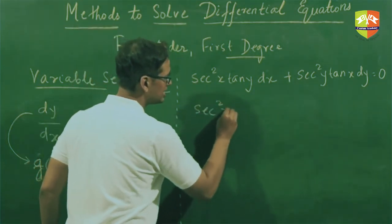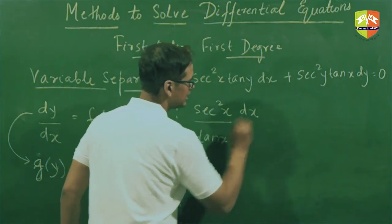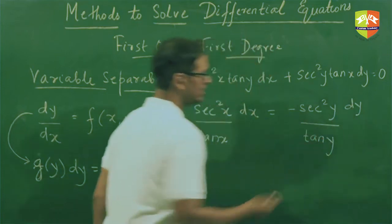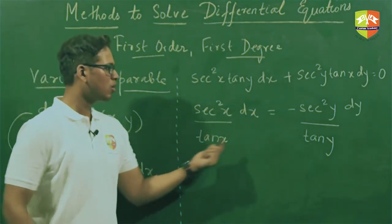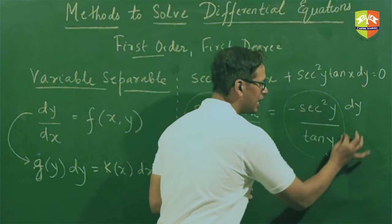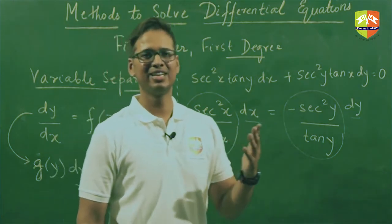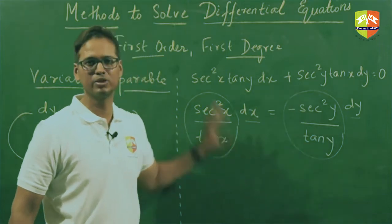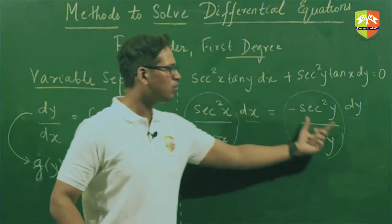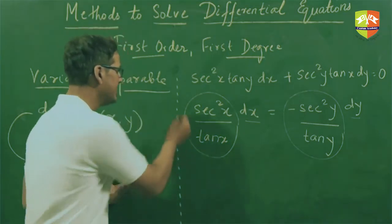I am going to rewrite this expression as sec²(x) dx / tan(x) = −sec²(y) dy / tan(y). I have separated out all the terms containing x along with dx, and all the terms containing y along with dy. Note that dx and dy should always be in the numerator, never in the denominator.